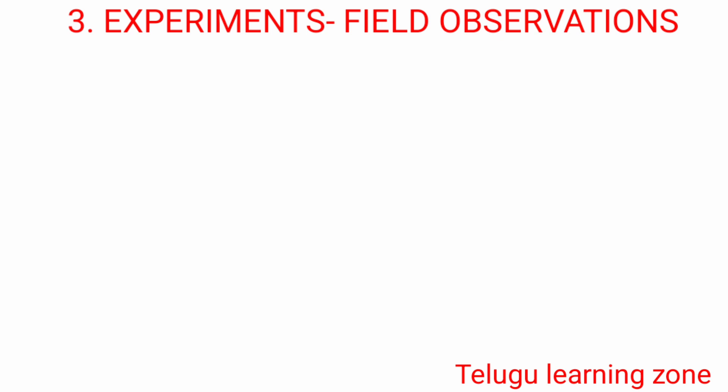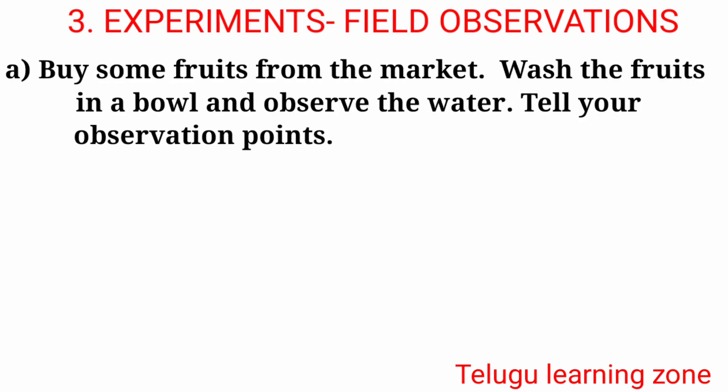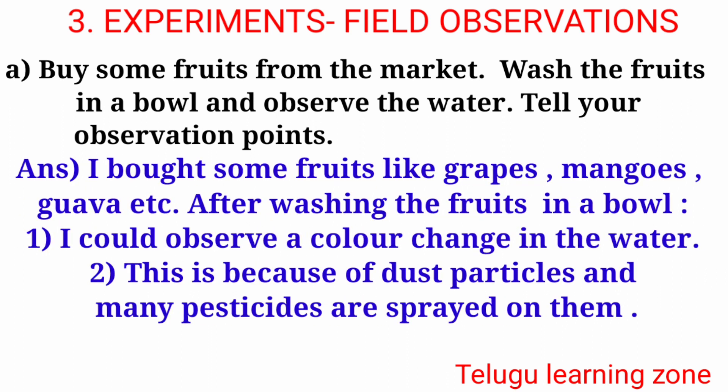Experiments and Field Observations. Question A: Buy some fruits from the market, wash the fruits in a bowl and observe the water. Tell your observation points. Answer: I bought some fruits like grapes, mangoes, guava etc. After washing the fruits in a bowl, I could observe a color change in the water. This is because of dust particles and many pesticides sprayed on them.